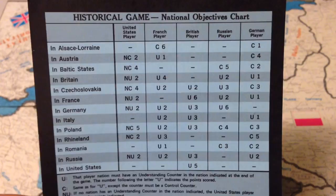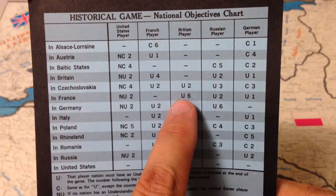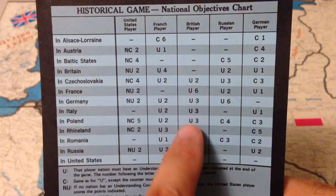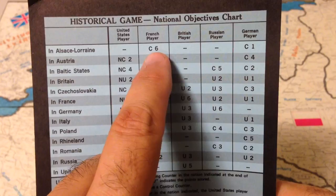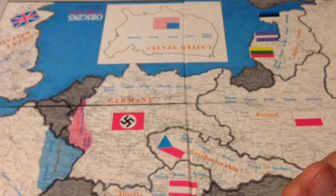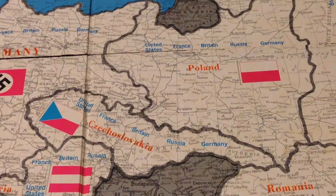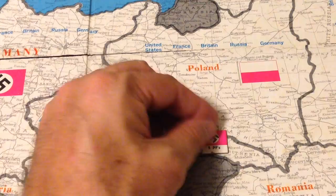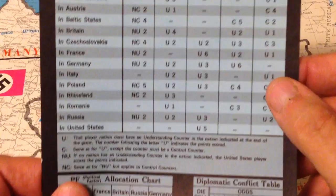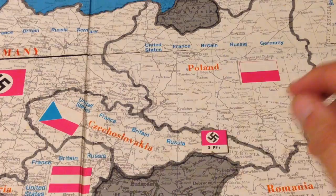To win this game, a major power must have more victory points than the others. These are scored by either obtaining an understanding with a country listed here, or controlling the country, indicated by a C, and the power receives that number of points. Control and understanding are two different concepts. To control a country, a major power must be the sole occupant and must have at least five political factors at the end of the turn. For example, if Germany has five political factors in Czechoslovakia, the national objectives chart calls for control of Czechoslovakia and three points for Germany.